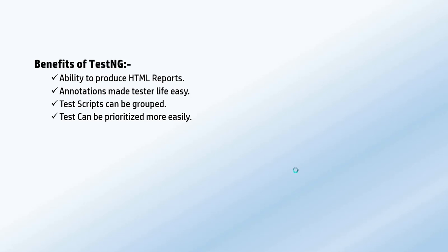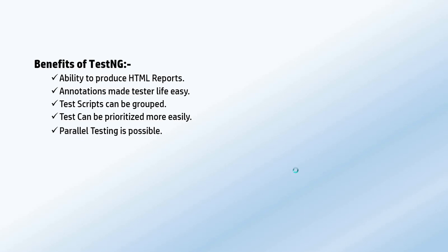The fourth benefit is that tests can be prioritized more easily. For example, suppose you have 50 test cases and you want to execute the 50th test case first. You can set the priority for that test case to zero. Priority starts at zero, so priority zero means it will be your first executing test script. Priority one means it will be the second test from the test suite.